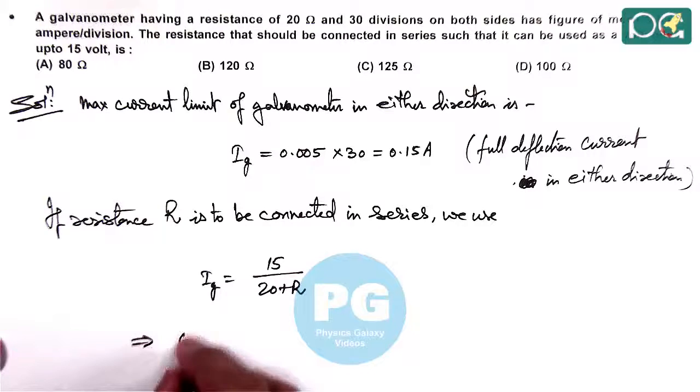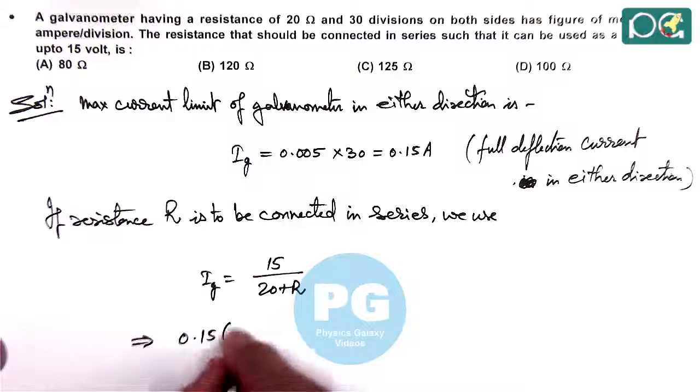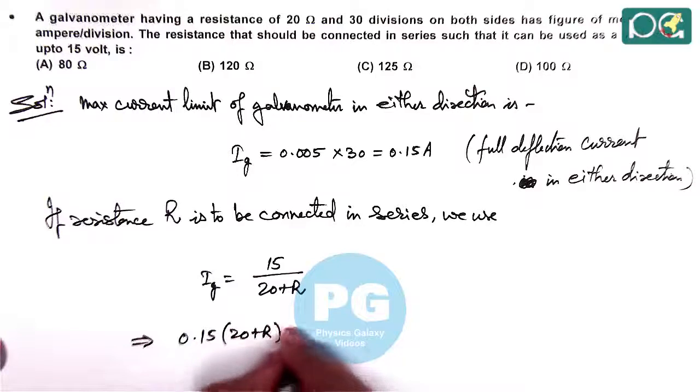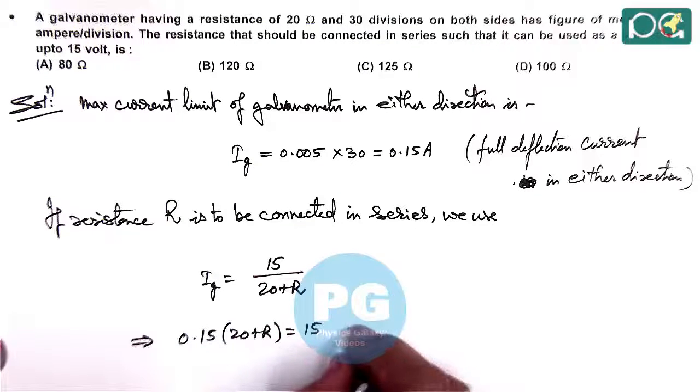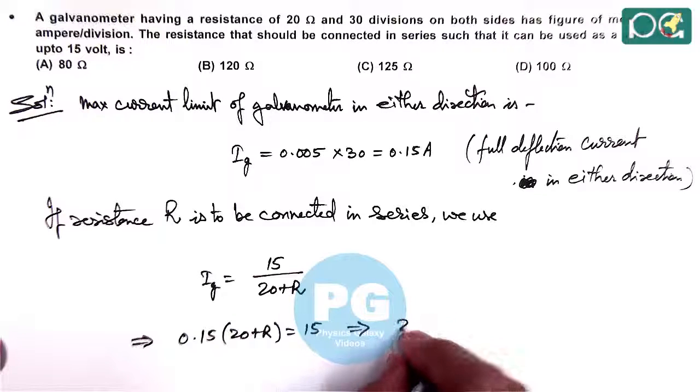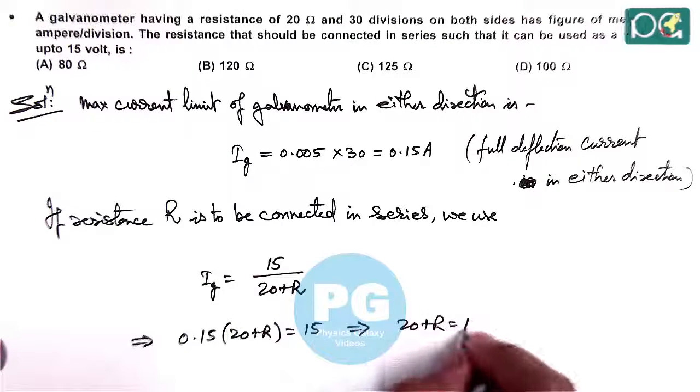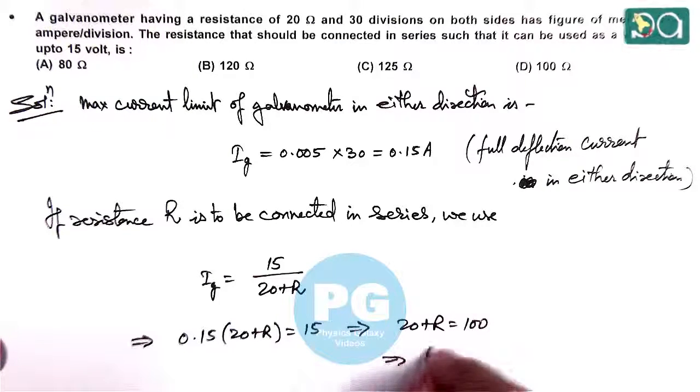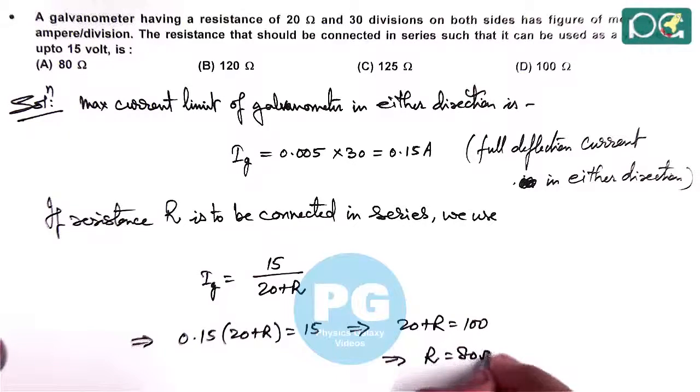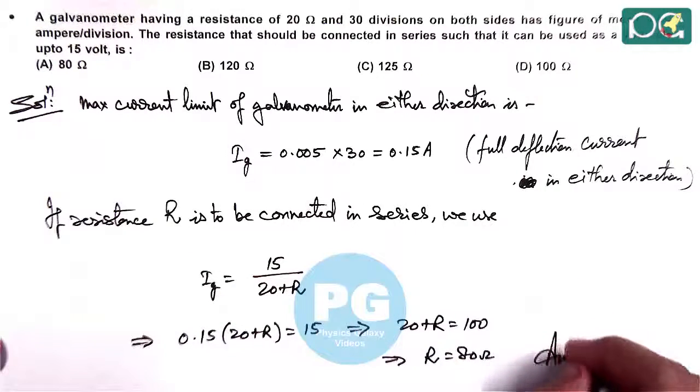So simplifying this gives us 0.15 into 20 plus R equals 15. And further simplifying this gives us 20 plus R equals 100. Or the value of R we are getting is 80 ohms. So it matches with option A.